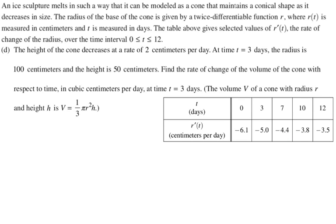The height of the cone decreases at a rate of two centimeters per day. At time t equals three days, the radius is 100 and the height is 50. Find the rate of change of the volume of the cone with respect to time in cubic centimeters per day. They're just giving you the units at time t equals three days. And then they give you the formula for volume. They pretty much always do that. So you can kind of count on that. We are trying to find the rate of change of volume with respect to time. That would be dV/dt. We're looking for dV/dt. We also know volume is pi over three r squared h.